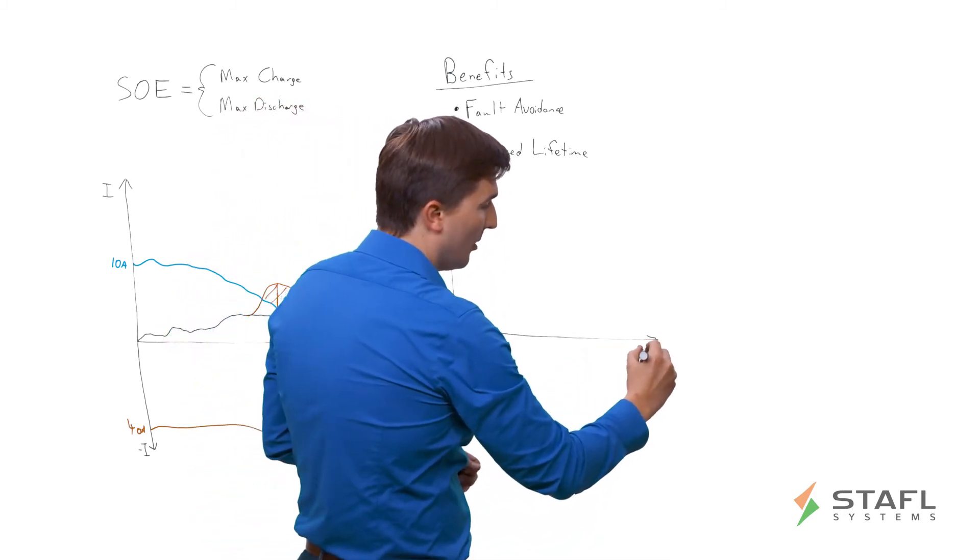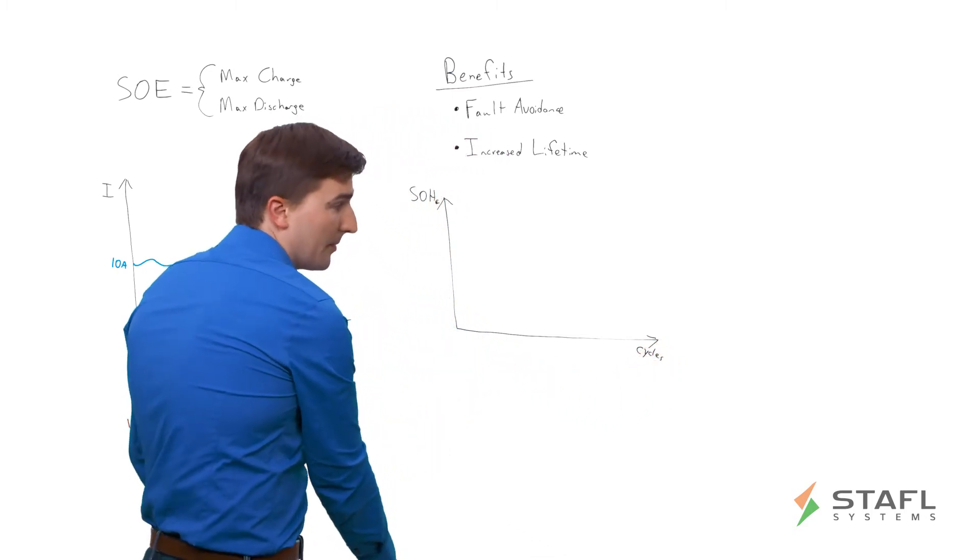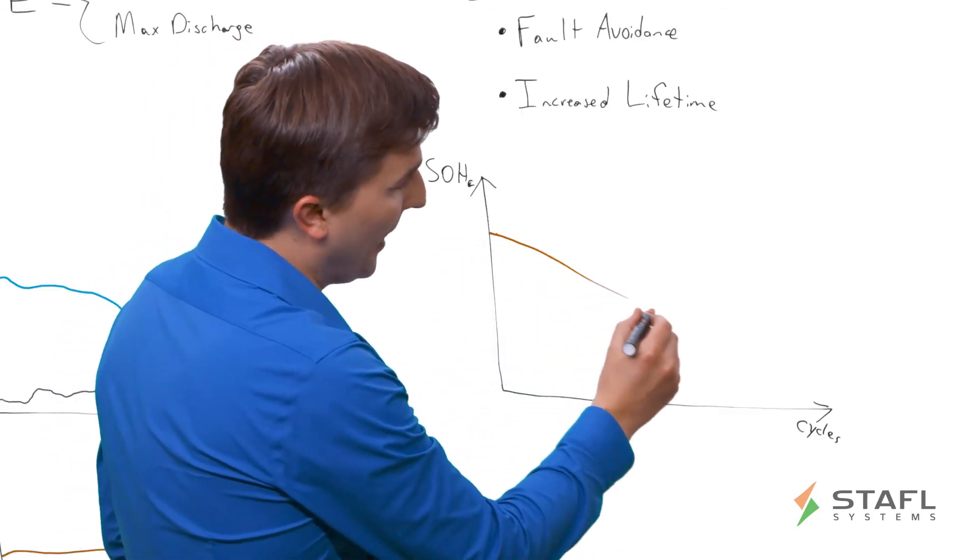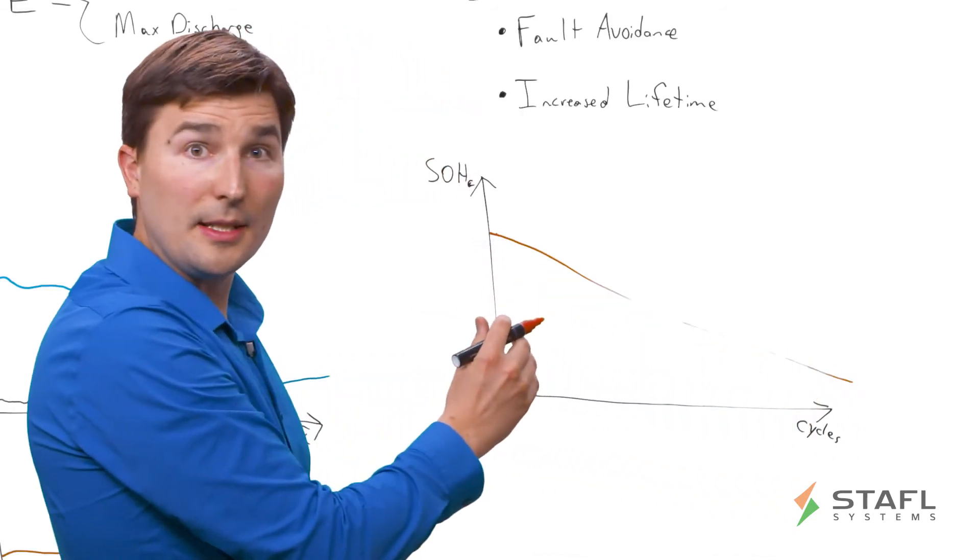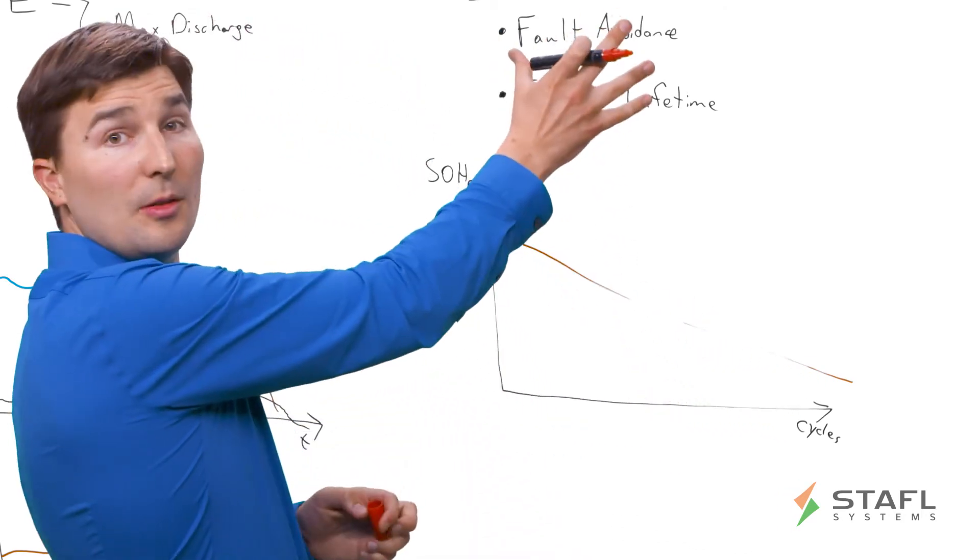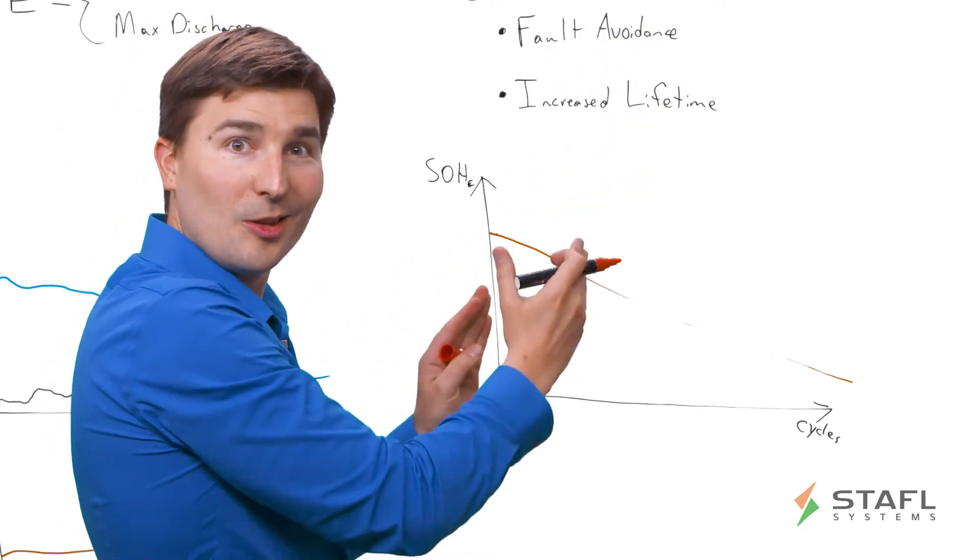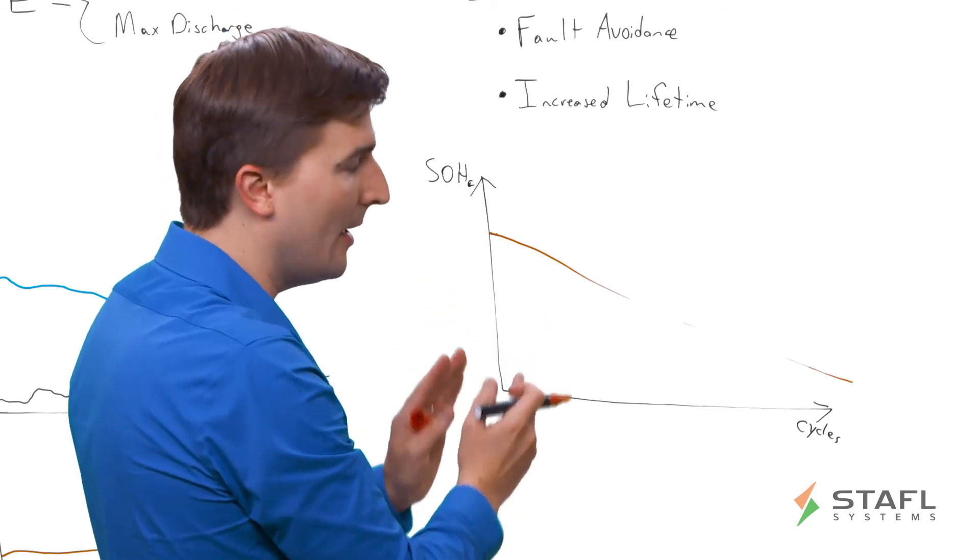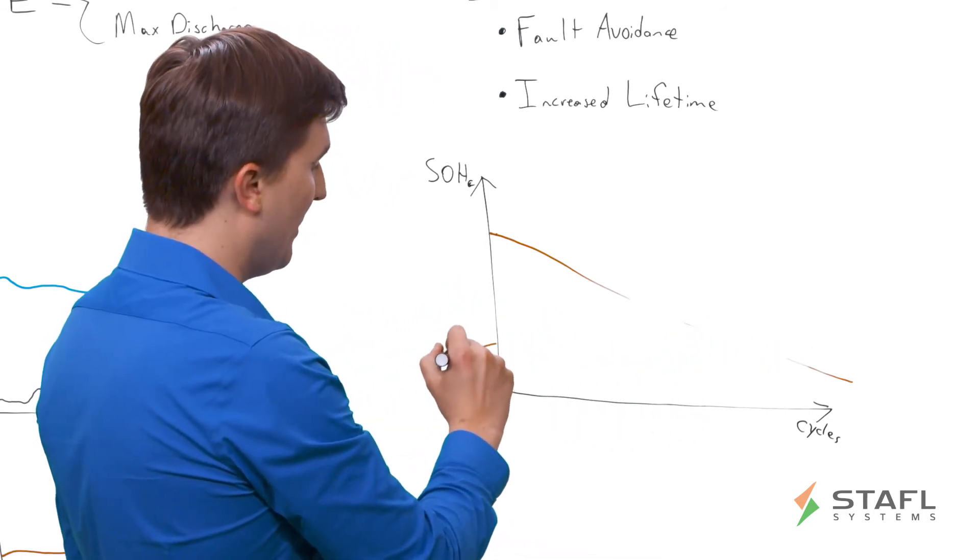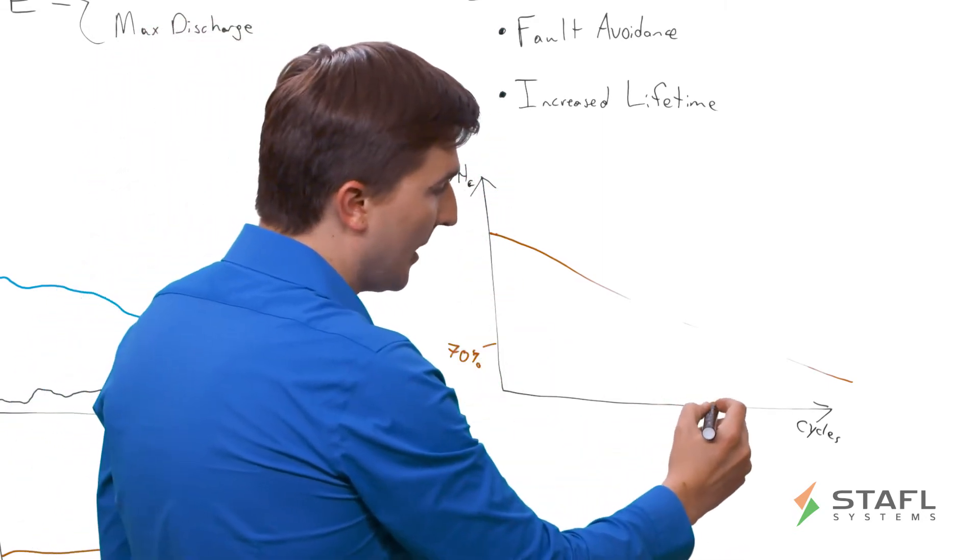And so over here on the x-axis, this is cycles that the battery has. And you can envision a scenario where in one use case, the battery pack reduces capacity very quickly. This is a very aggressive use case, which may still lie within the fault avoidance scheme, but it is being thermally stressed or electrochemically stressed in such a way that you are going to have, say, 70% state of health after, say, 500 cycles.